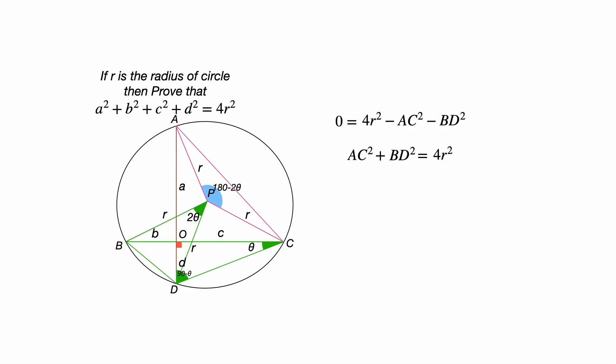Now, let's consider the triangle AOC. In this, AO is small a. OC is c. So, using Pythagoras theorem, we can write AC² as a² + c².